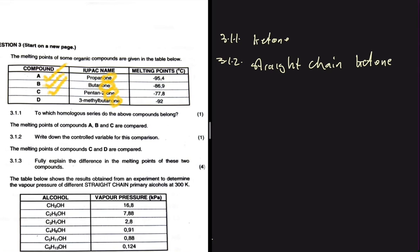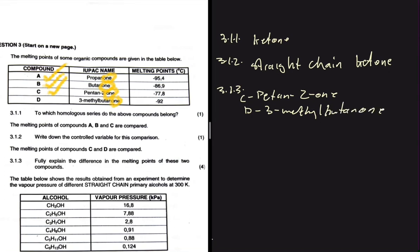Question 3.1.3 compares the melting points of compounds C and D and asks us to fully explain the difference. Compound C is pentan-2-one, and compound D is 3-methylbutan-2-one — both are ketones ending in 'one'.